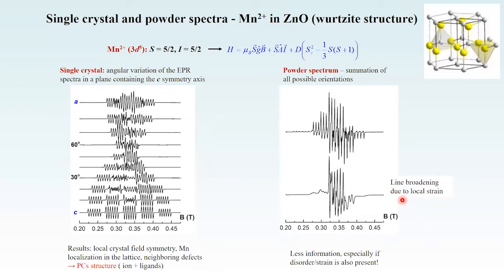In a powder, less information is obtained, especially if disorder is high or if the particle size goes to the nanoscale. The fine structure is lost, and we observe only the central lines. This is characteristic for nanostructured materials.